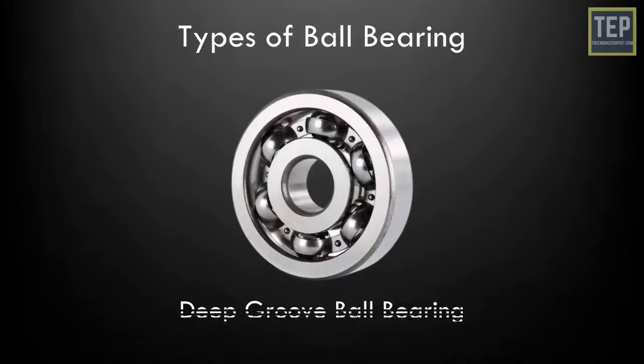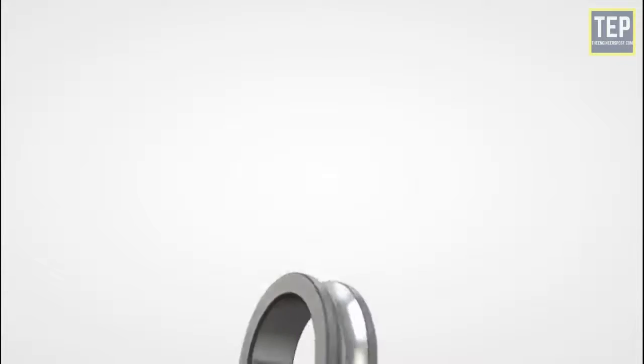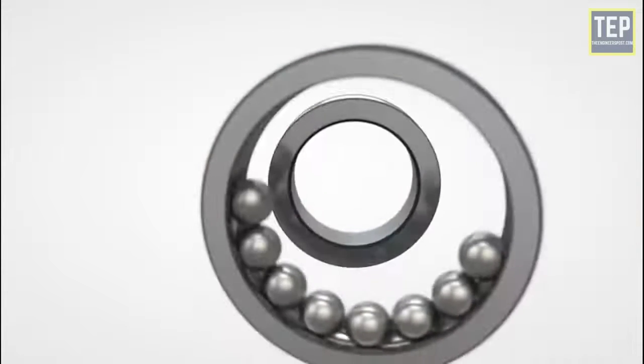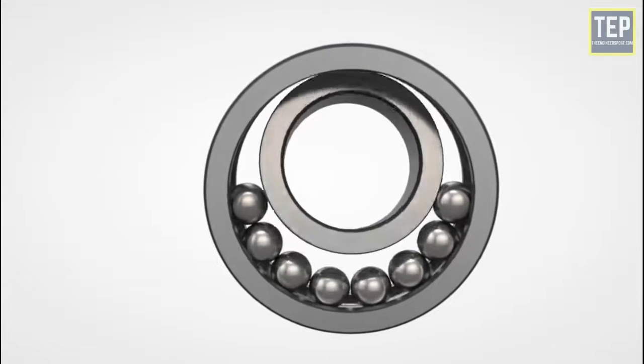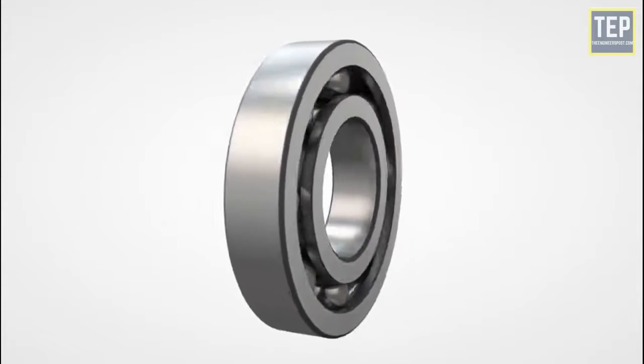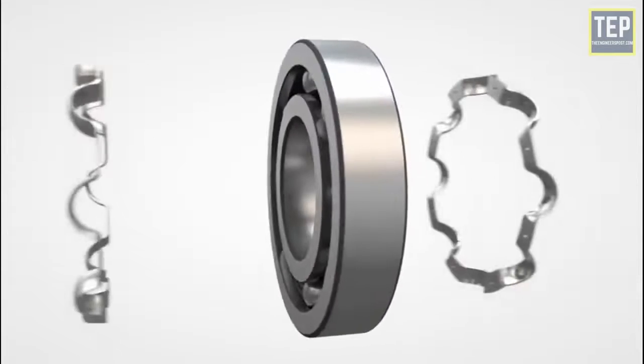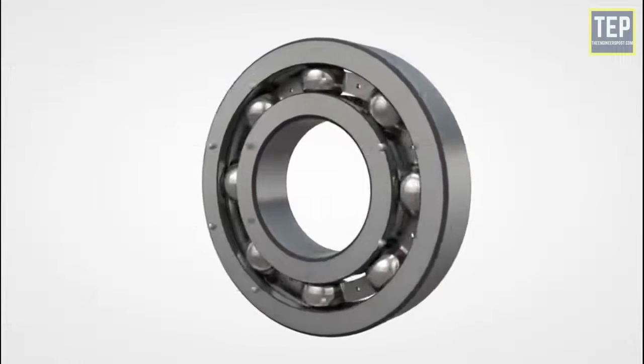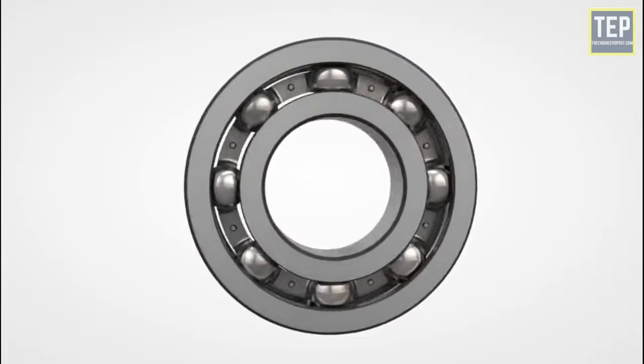Deep groove ball bearings. This is the most widely used ball bearing. Trapped between the two races is a ring of balls that transmit the load and allow rotational motion between the two races. The balls are held in place by a retainer. They have very low rolling friction and are optimized for low noise and low vibration.